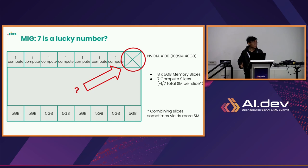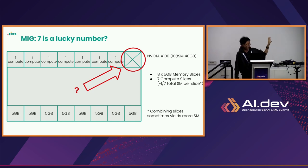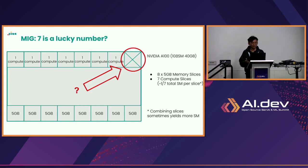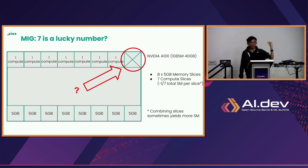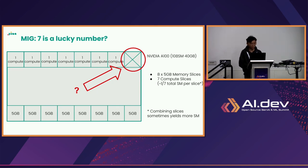For the A100 80GB, streaming multiprocessors remain the same but each memory slice now has 10GB of VRAM. The H100 has more streaming multiprocessors, so each compute slice gets more, but still roughly one-seventh. As for why seven compute slices but eight memory slices — NVIDIA's official reason is that chip yields are better with seven. This peculiarity causes some partitioning issues, which I'll explain shortly.